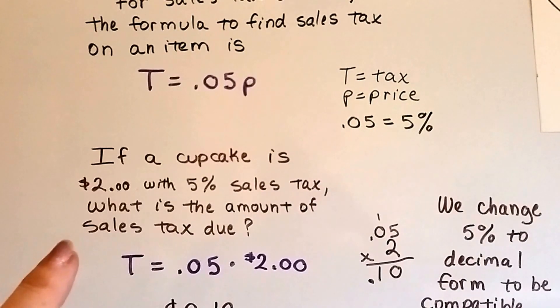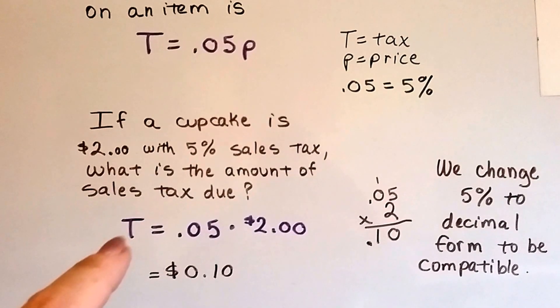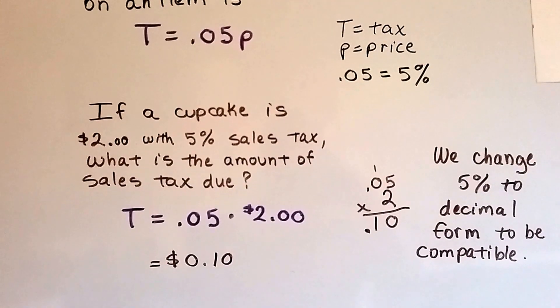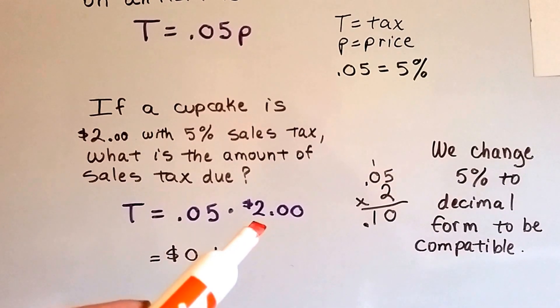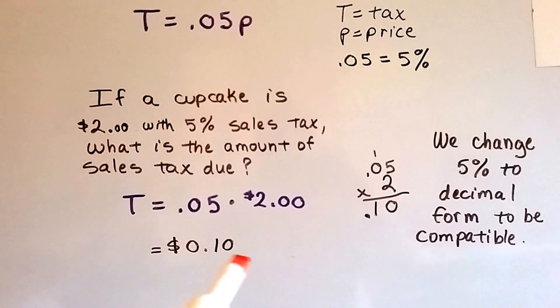If a cupcake is $2 with a 5% sales tax, what's the amount of sales tax due? The tax is equal to .05 times that $2. .05 times 2 is 10 cents. So we write it like this.